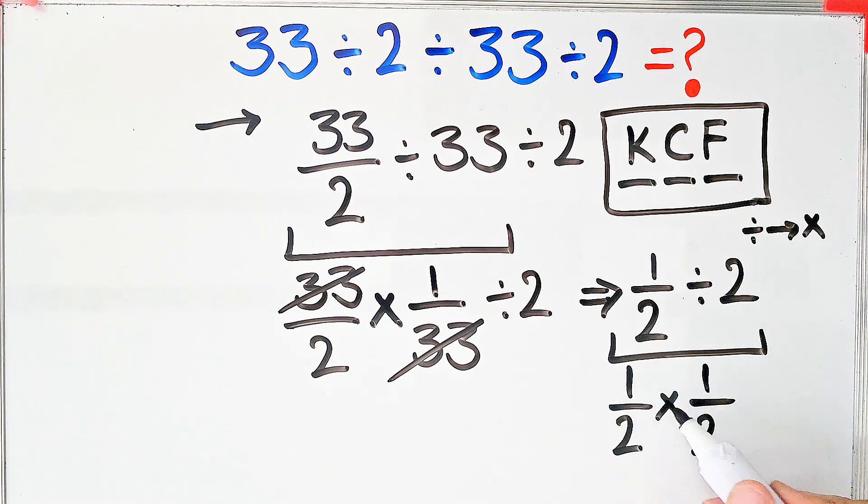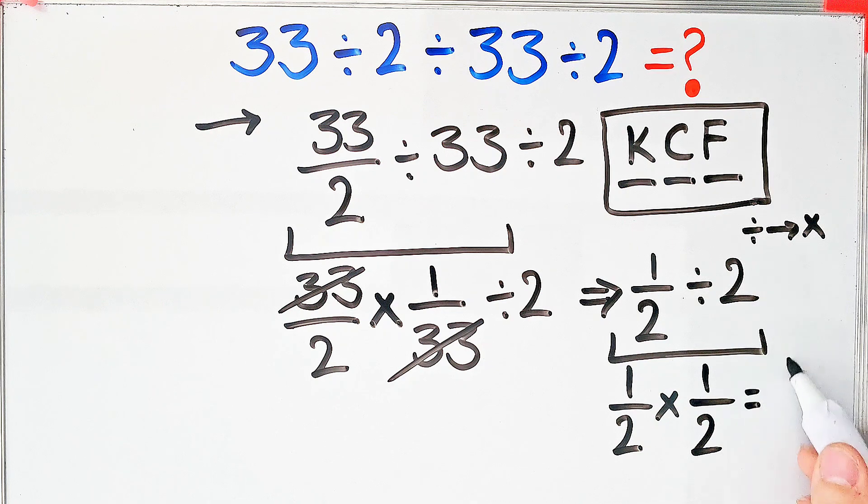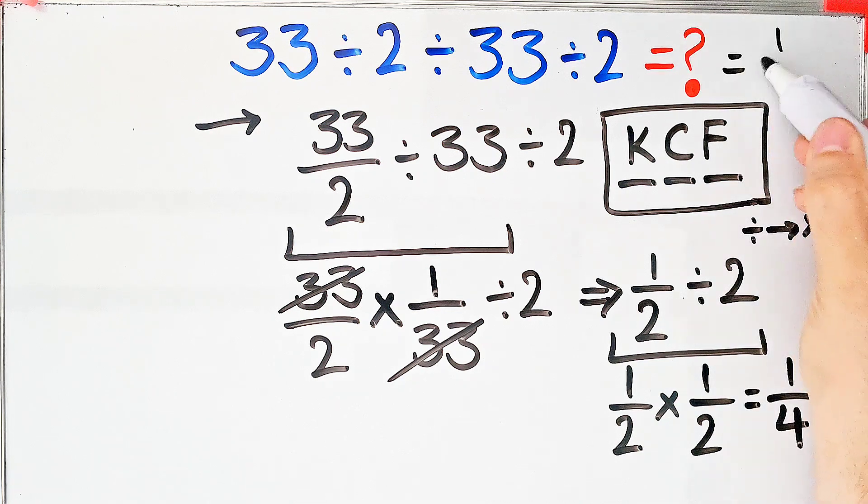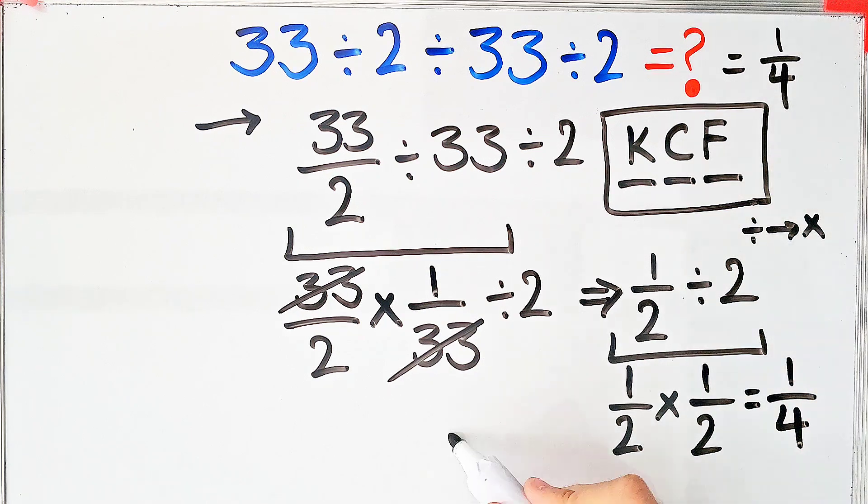Now we have 1 over 2 times 1 over 2 which equals 1 over 4. The final answer of this question equals 1 over 4. Thanks for watching, guys. Please subscribe to the channel and leave a comment. Goodbye.